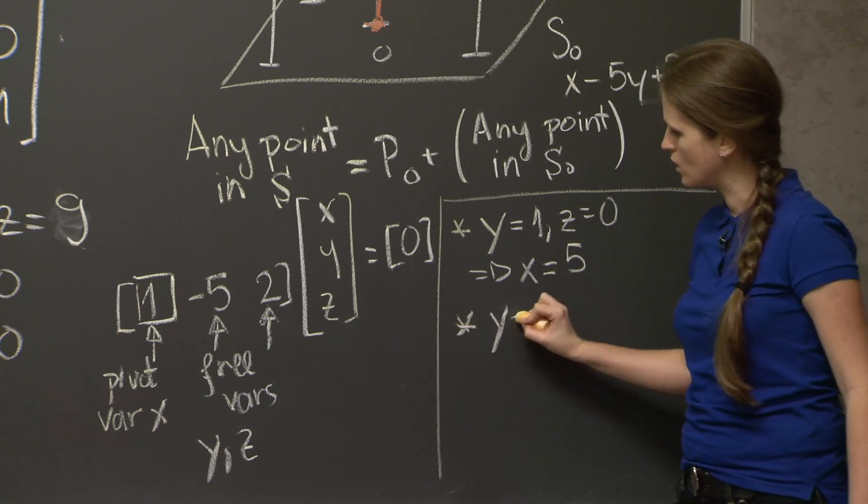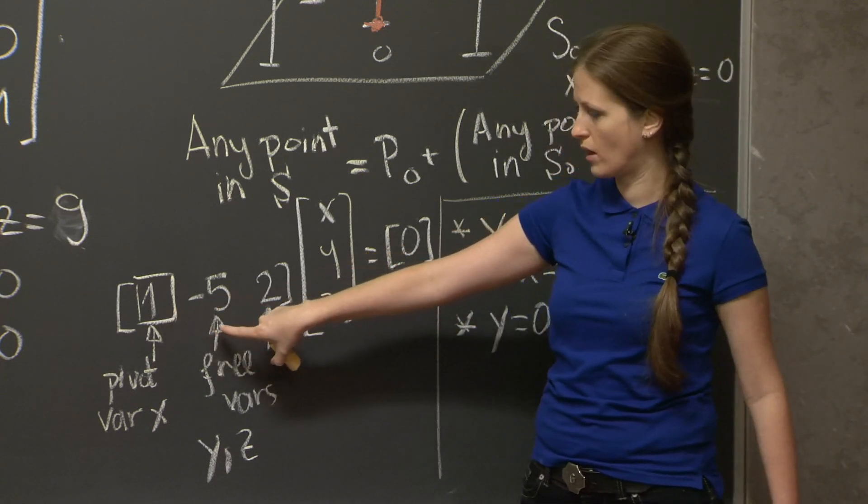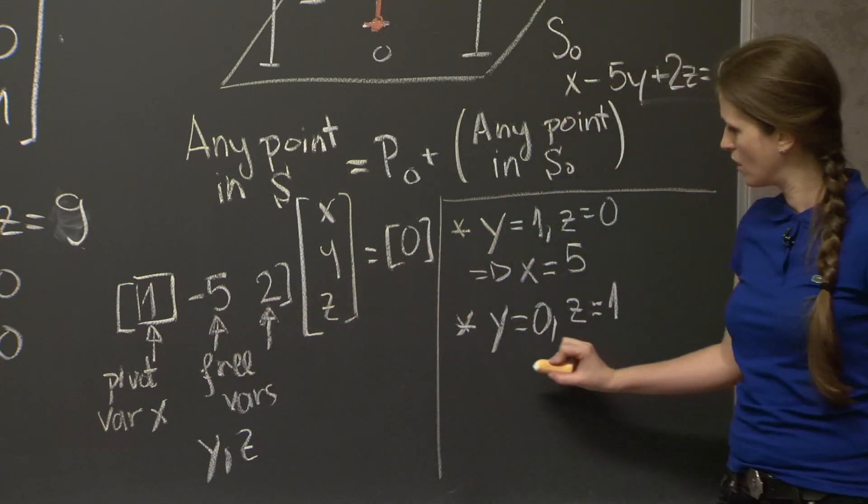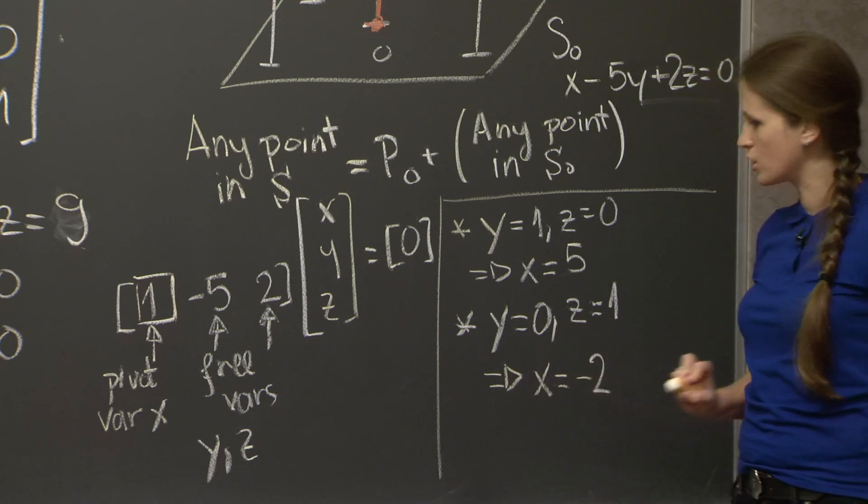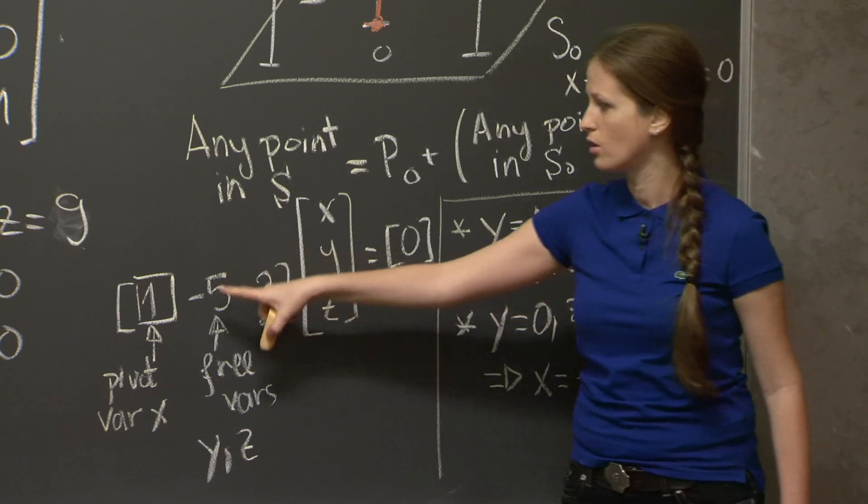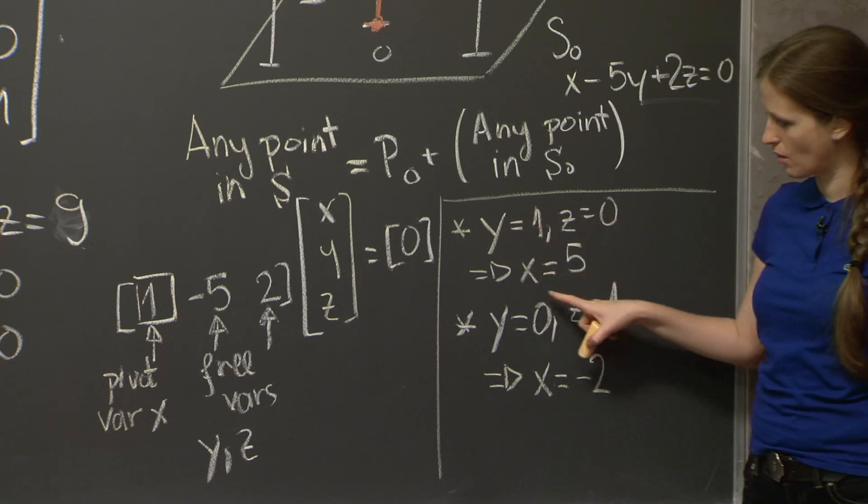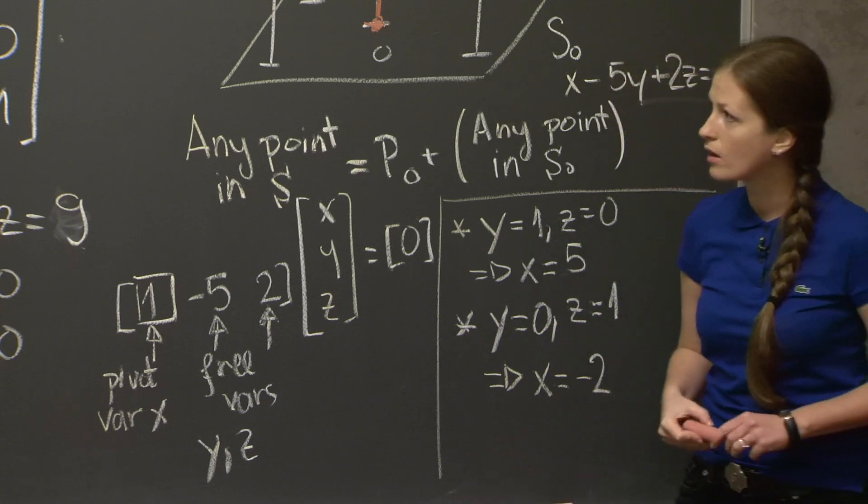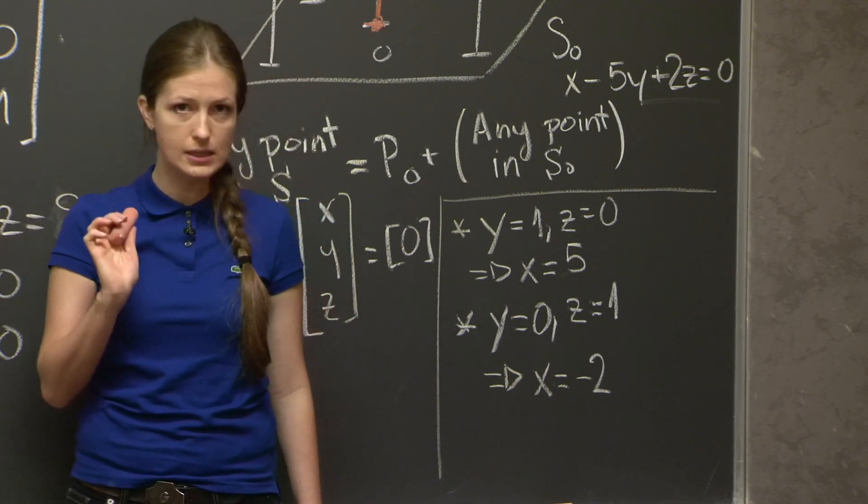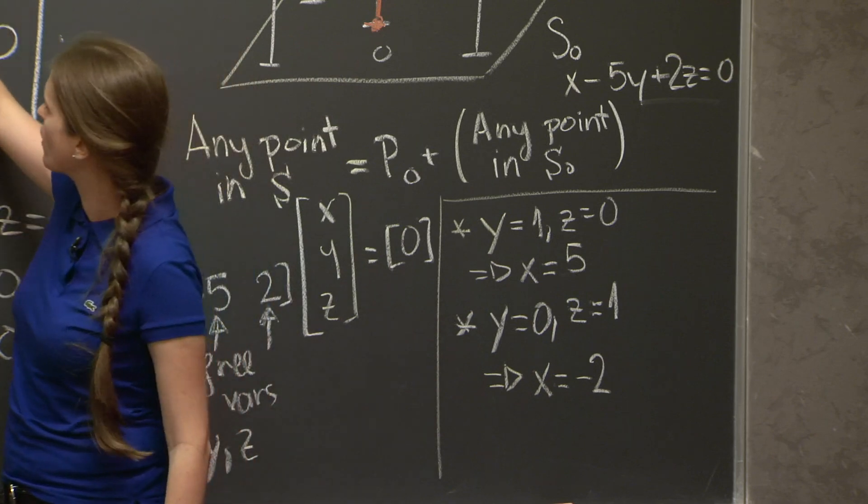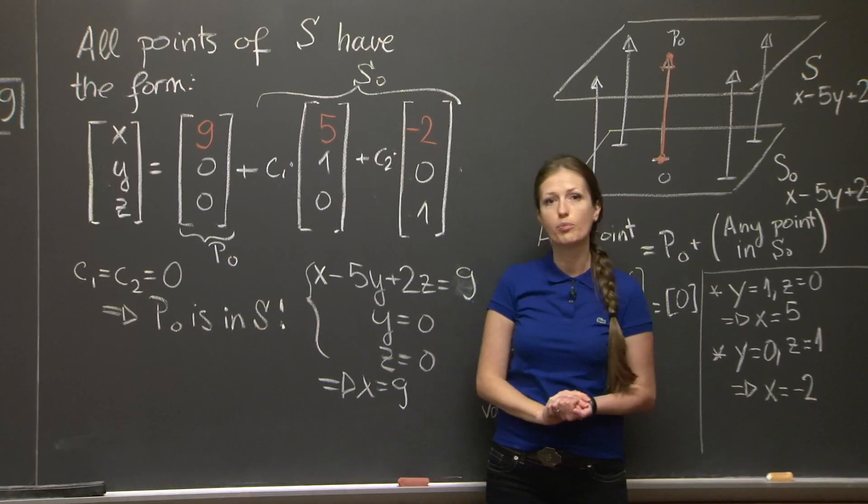And the other solution is for setting all free variables equal to 0 except z, which we set equal to 1, and then we get x - 5(0) + 2(1) = 0, so we get that in this case x equals -2. And any solution of this system is going to be of the form some constant times this plus some other constant times this. And if we walk back to our original problem here, we see that these parameters have been set up exactly so that we can just take these numbers and just copy them over: 5 and -2. And this is the general form of any point of the plane S.